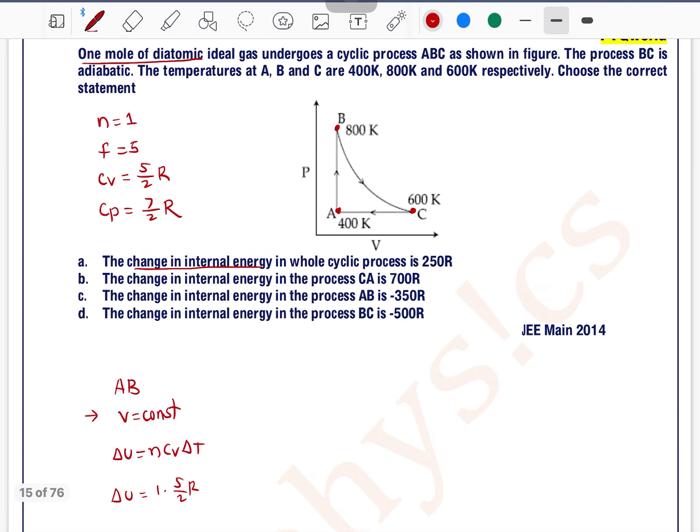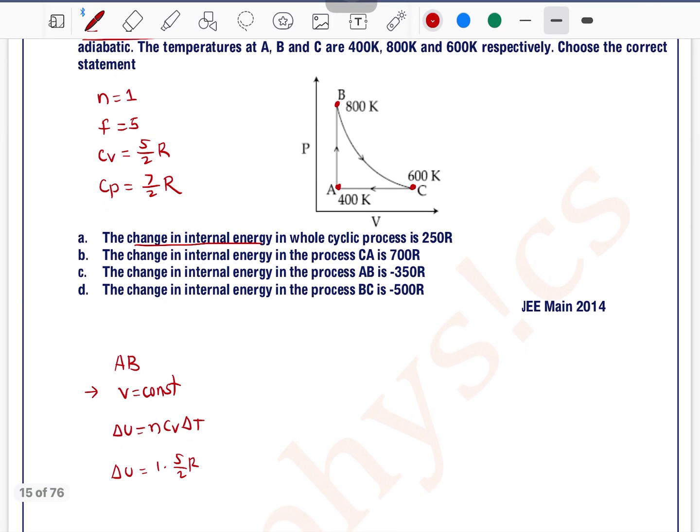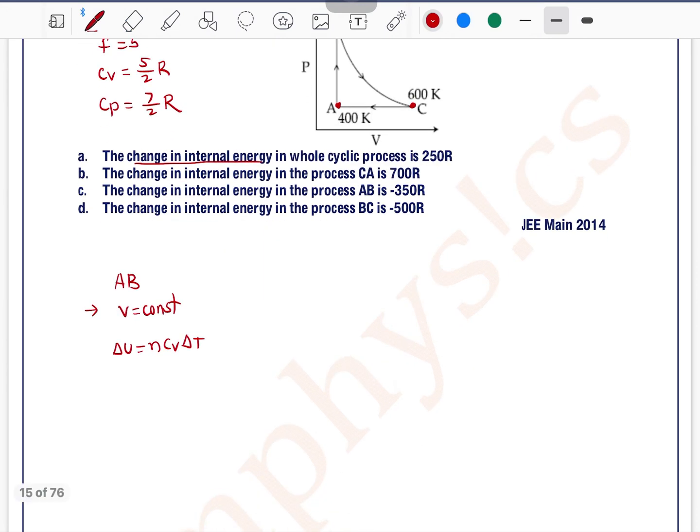We can write delta U for process AB as 1 into 5 by 2 R into change in temperature. The temperature is not given so we will do some adjustment here. We have a formula for delta U: we can write this as n into F by 2 R delta T.